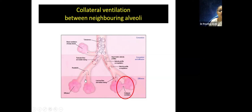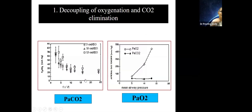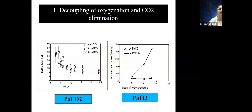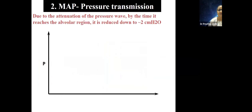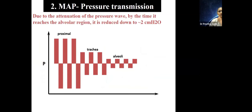An important feature of high-frequency ventilation is decoupling of oxygenation and CO2 elimination. Setting the MAP improves oxygenation but does not affect CO2 elimination. The knobs for each are completely different and don't interfere with each other — that is one basic difference from conventional ventilation.